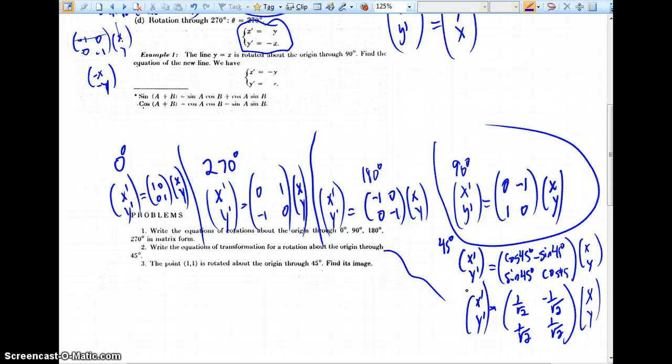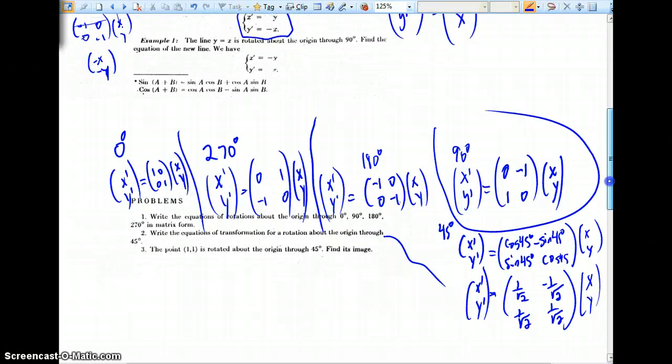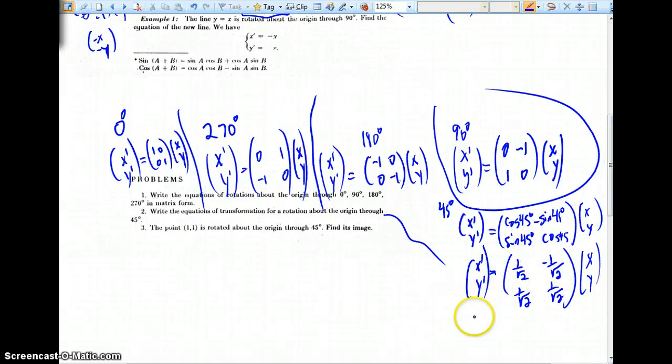We could also quickly arrive at the multiplication, just a system of equations. x prime, this top entry, how would we get our top entry? Top row, multiplied 1 over root 2 times x, minus 1 over root 2 times y. y prime, of course, we'd take our row by column: 1 over root 2 would get multiplied to x, and then we'd say plus 1 over root 2 times y.